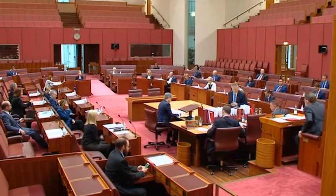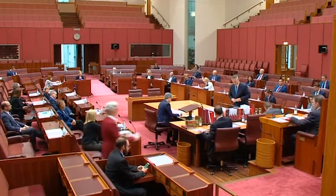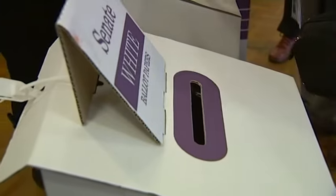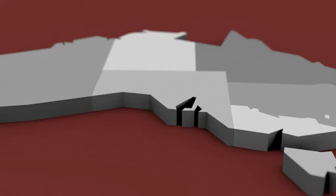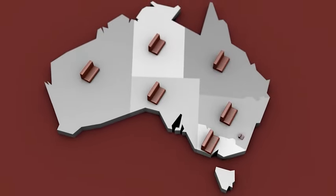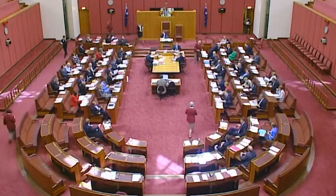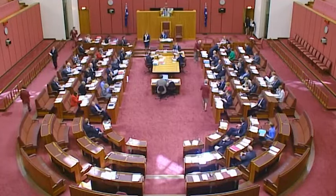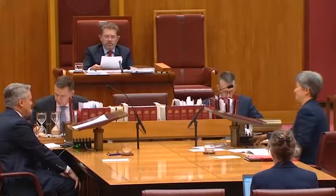This is the Senate. Senators are elected to represent Australia's states and territories, so the Senate is sometimes called the State's House. Senators can speak about issues and events which are important to the people in their state or territory.